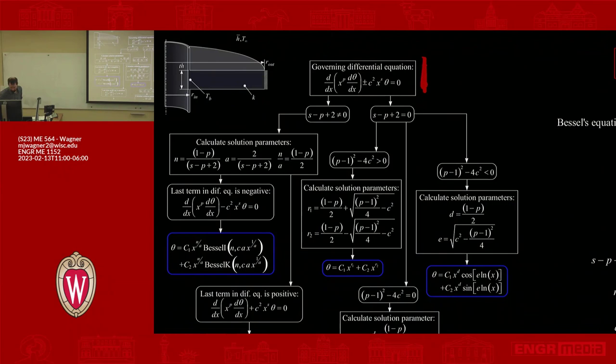There's this general form of the equation up here. If you ever see an equation that looks like derivative of the independent variable to some power times the derivative of the dependent variable plus or minus C squared X to some power times temperature—that's a Bessel function. This is a family of functions. Based on the values of the exponent, you can go through and decide: does s minus p plus 2 equal 0 or not? If it doesn't, you calculate these secondary parameters based on the powers.